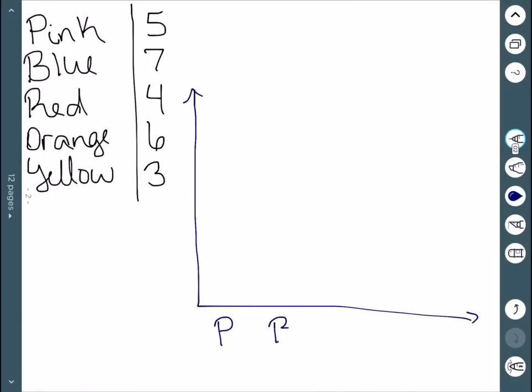P for pink, B for blue, R for red, O for orange, and Y for yellow. And then the y-axis is frequency.